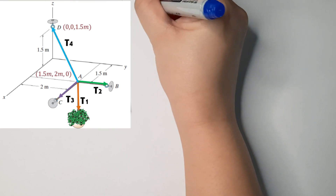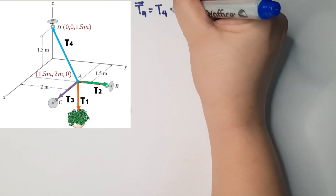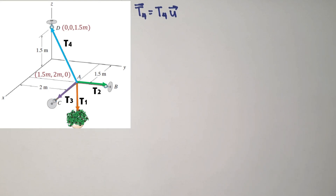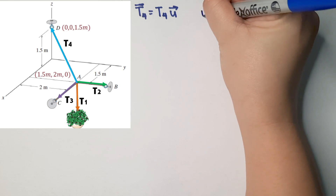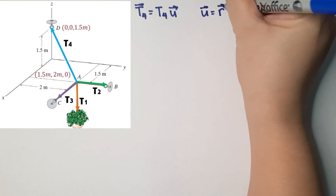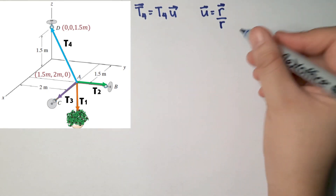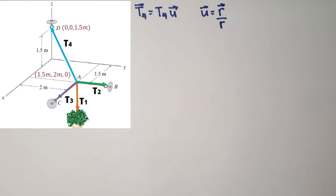T4 as a force vector equals its magnitude times its unit vector. We cannot use the formula cosine α î + cosine β ĵ + cosine γ k̂ for the unit vector here. Instead, we use the formula from our previous lecture: unit vector equals the position vector r divided by its magnitude. The position vector runs from the origin of the vector to its end.